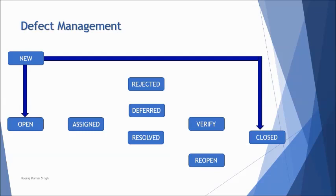In case the defect is not found genuine, it will be directly closed from 'New' to 'Closed.' This can happen due to a misunderstanding, an invalid set of data used, or a typographical error. Once assigned, the developer begins debugging, which involves analyzing the reported issue, conducting a Root Cause Analysis (RCA), and fixing the issue.